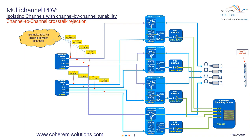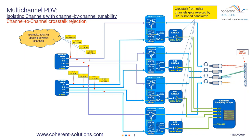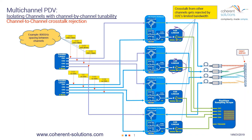You can set each tunable laser at essentially the same frequency as its corresponding channel and set the offset just as in previous slides, so that you have a non-zero starting beat frequency. The four probes can still cross-talk to each other, except the spacing between channels is now 800 gigahertz. The ODE has limited bandwidth of about 20 gigahertz, so even if channel 2 mixes into channel 1, you'll never see those components because the beat frequency is well above the ODE detector's bandwidth. In this way, you are very immune to crosstalk.